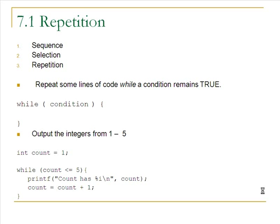The first repetition construct we'll look at is the while loop. Here's the general form: the keyword is while, and the condition will evaluate to true or false. You can make a relational expression there, or anything that evaluates to true or false, and it should eventually become false so the loop will eventually end. The rule concerning the parentheses is the same as with if statements. The while loop controls one statement or one compound statement, so the braces will almost always be there.